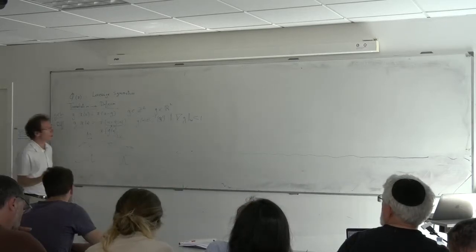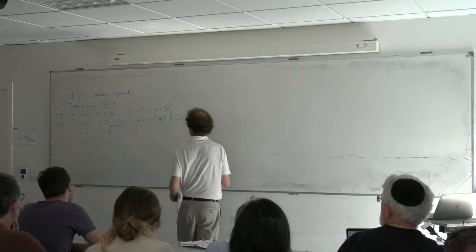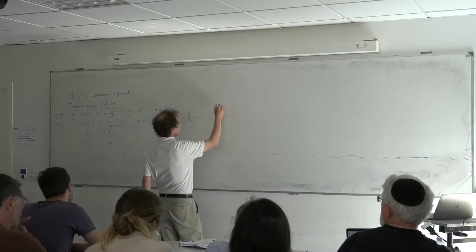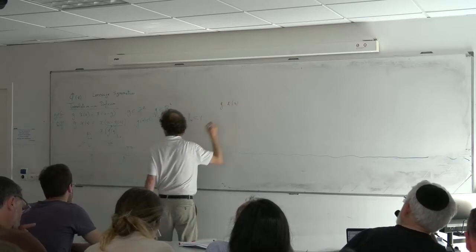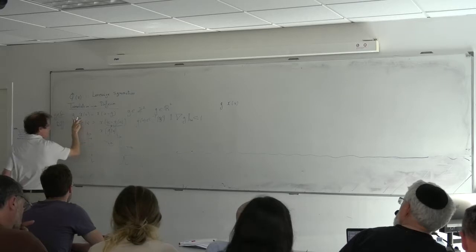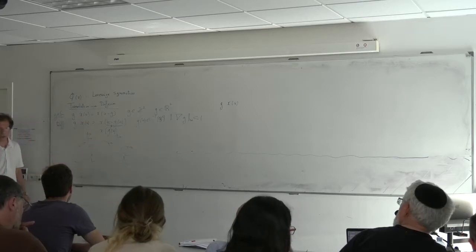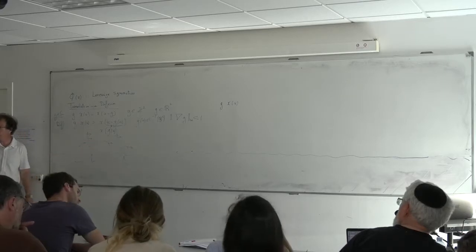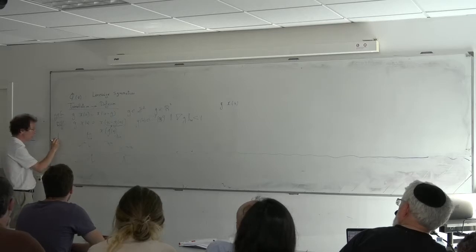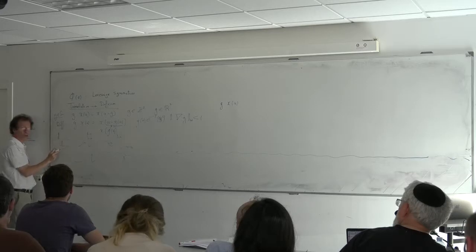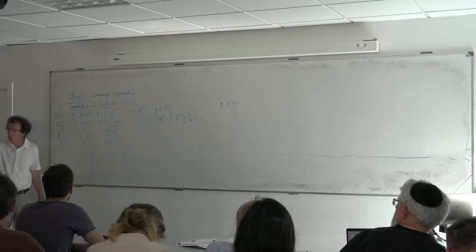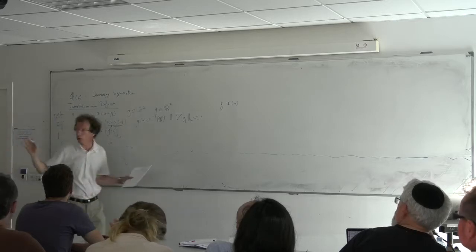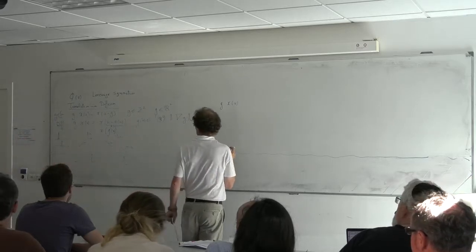What does it mean to linearize in a weak way? What you would like is that the action of G over X — now, what is important to realize is that X has absolutely no regularity. A translation of a Dirac, even a small translation, defines you something, and these are two orthogonal functions — the support is not the same. So a small translation can send you very far away in the space.